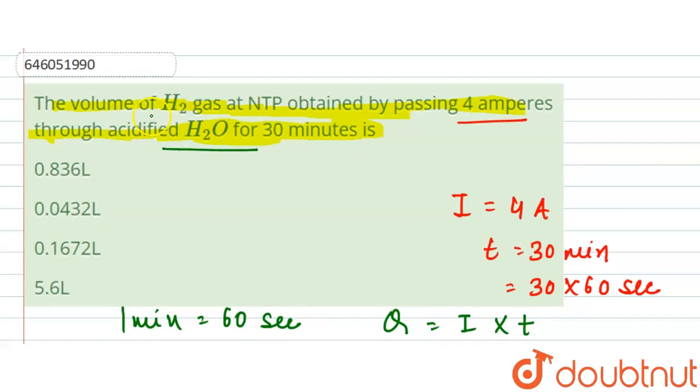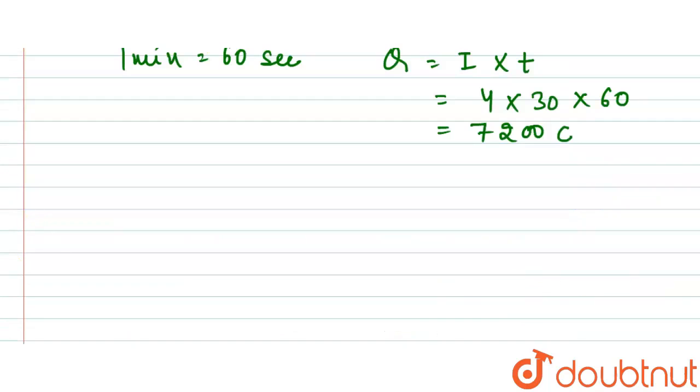We want to know the volume of H2 gas at NTP. NTP is the normal temperature pressure conditions. Here we can write the equation in two terms: 2H2O plus 2 electrons gives H2 plus 2OH minus.